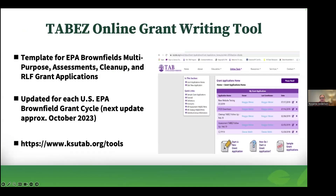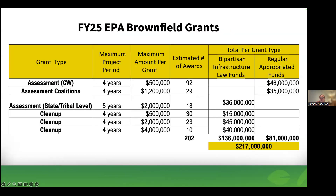This year the U.S. EPA Brownfield grant season closes November 14th. Available grants include community-wide assessment grants, coalition grants, and cleanup grants, with over $217 million being offered in total. There are a lot of opportunities for smaller communities, especially since this year there's no match requirement — though it's unclear if that will continue next year.